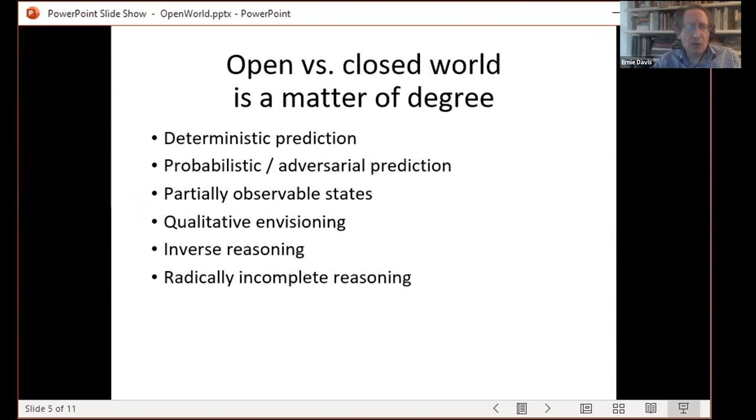Weakening the closed world assumption, one can consider prediction in a world which is either probabilistic, you have a probabilistic dynamic theory or probabilistic exogenous events, or adversarial, you have an enemy. The states may be partially observable, you may be doing qualitative reasoning, Ken Forbus' style where you only have going positive and negative and going up and going down, and you want to reason in those terms. There is a substantial body of literature on inverse reasoning, you're given the trajectory or you're given the final state and you want to determine the physical parameters.